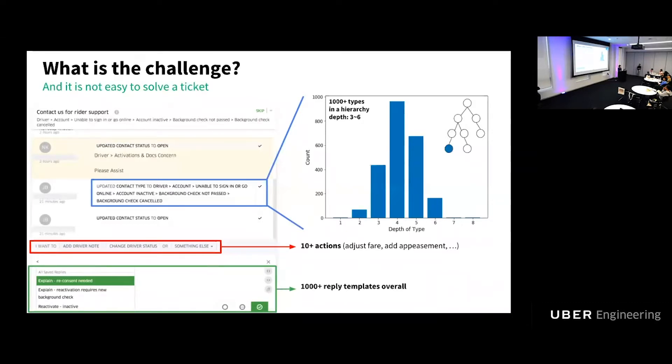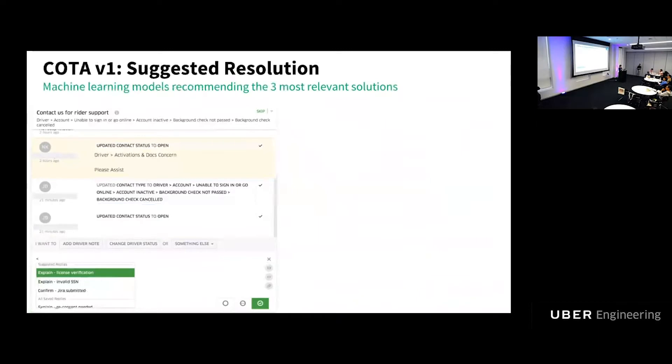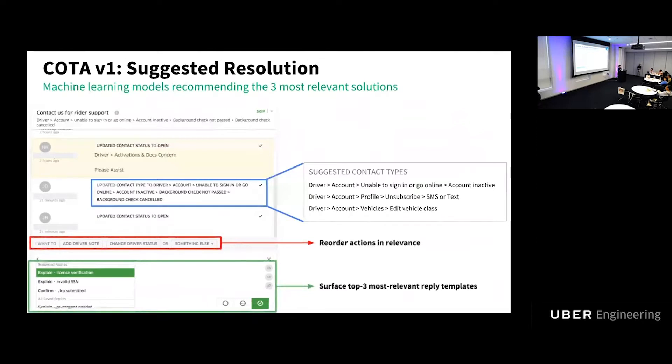Because of this, this motivates us to build COTA, propose and build COTA. So COTA V1 consists of a set of machine learning models that recommend the top most relevant solution to our agent. Specifically, it has three models: Type models that present the top suggestions contact type to our agent, so they can pick one rather than pick one out of thousands. After that, the action model will reorder the actions based on their relevancy to the ticket. And then reply model will surface the top three most relevant reply templates to our agents. Because the type model and the reply models are more difficult, there are thousands of classes in this case, so in the rest of this talk we are going to focus on these two models.